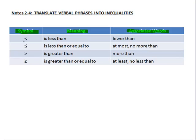The first one you have is the less than, and we associate the words fewer than with that. So if you see fewer than in a word problem, you're probably talking about less than. The next one is less than or equal to, and we see terms such as at most and no more than. Those tell you that we're talking about less than or equal to.